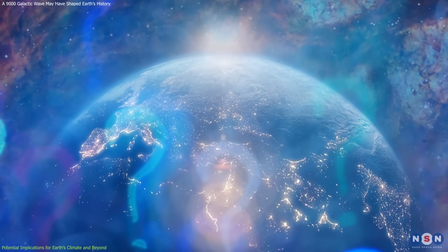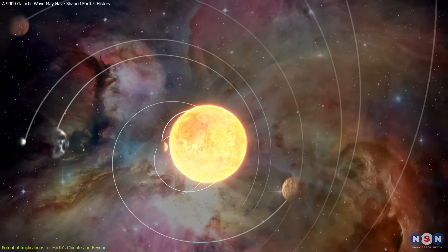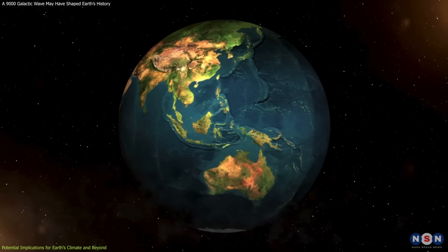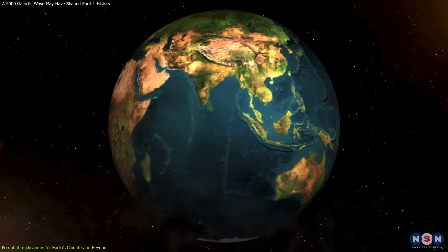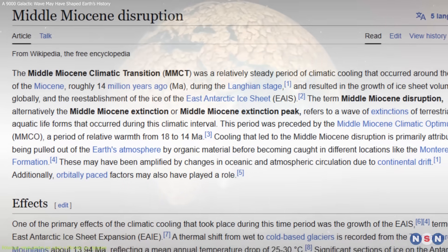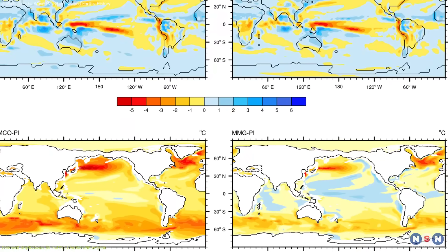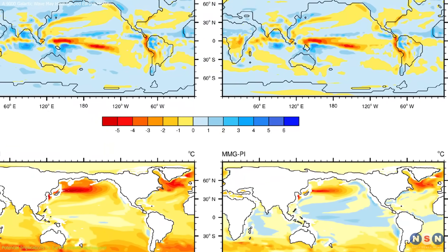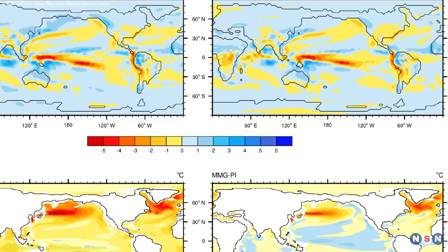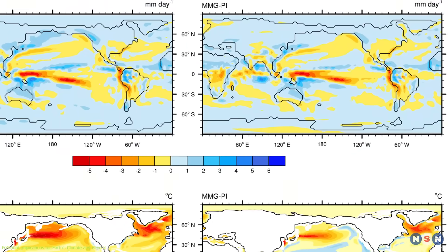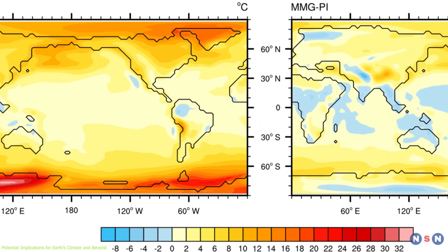Why is this significant? The period of the solar system's passage through the Radcliffe Wave coincides with a major climatic event on Earth, the Middle Miocene climate transition. During this period, around 14 million years ago, Earth experienced a shift from a warm, variable climate to cooler conditions, leading to the expansion of Antarctic ice sheets.